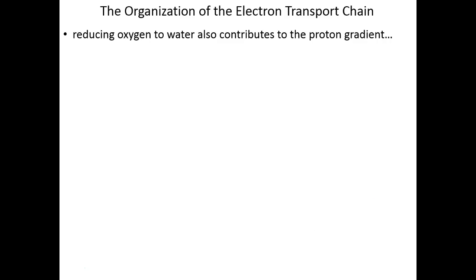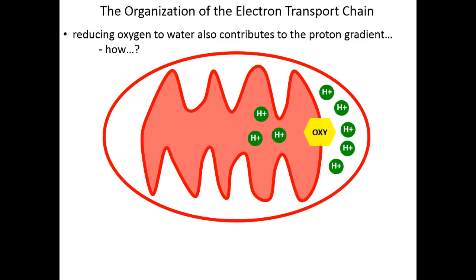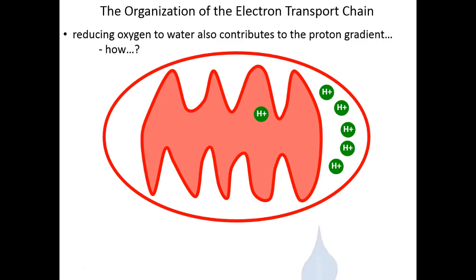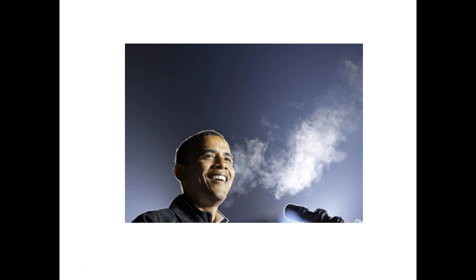Reducing oxygen this way contributes to the proton gradient, because as oxygen accepts two electrons from two subsequent iron-sulfur clusters, it absorbs protons from the matrix, reducing the number of protons there. Oxygen, when reduced and protonated, is water — and that water is released. The water vapor you exhale on any cold New England day is the water created by this very last step of the electron transport chain.